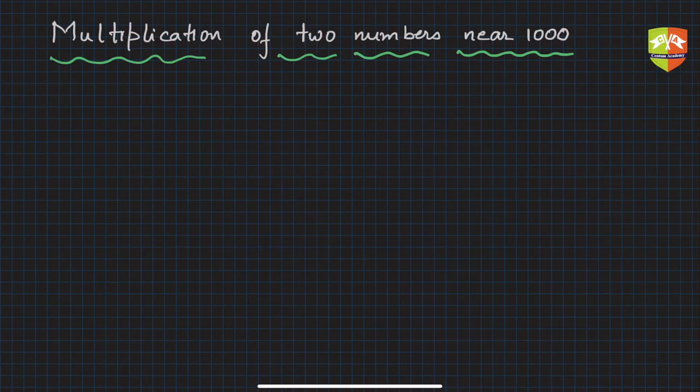Hello and welcome to another session on speed mathematics. Continuing with our series on multiplication, we will learn how to multiply two numbers which are very close to 1000. Like in the case of 100, we will be doing this in three phases. First, when both numbers are less than 1000, then when both are greater than 1000, and in the third phase where one is greater and another is less than 1000.